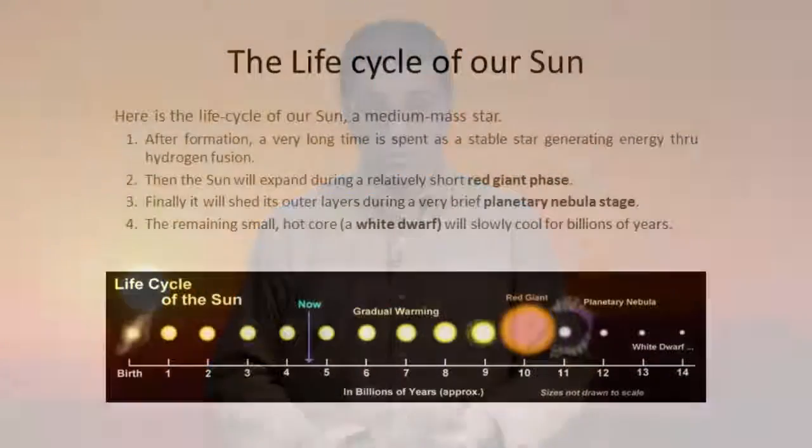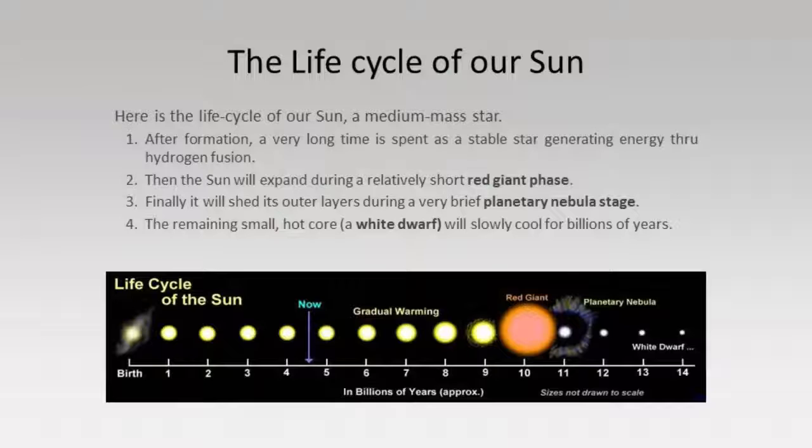At some point the Sun will begin to shed its outer layers, expelling them out into space. This material will slowly drift away and eventually may form a next generation of stars, much as our Sun was formed from material expelled by earlier stars. What will be left of the Sun is really just a relatively small, very hot core — which we call a white dwarf star — and we can see these out in space today.